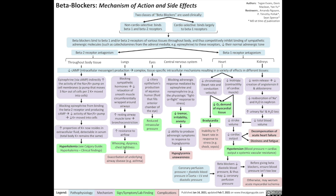Note that coronary perfusion pressure is the result of diastolic blood pressure in the aorta subtracted by the left ventricle's end-diastolic pressure. Because of beta blockers' effect on reduced coronary perfusion pressure, before giving beta blockers a clinician must ensure blood pressure isn't too low. Otherwise, giving the beta blocker may actually worsen acute myocardial ischemia, because less blood is perfusing through the coronary arteries.